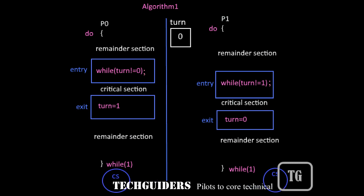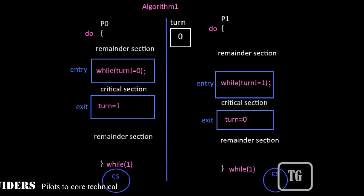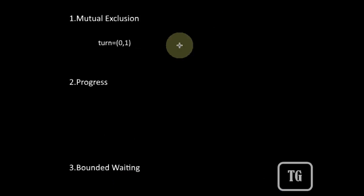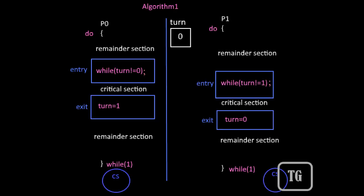In the last video we saw that a solution to the critical section problem should satisfy three conditions: mutual exclusion, progress, and bounded waiting. Let's check whether this algorithm satisfies all three. First, mutual exclusion: the value of the turn variable can be either 0 or 1, and depending on each value only one process can enter the critical section at any time. Hence mutual exclusion is guaranteed by this algorithm.